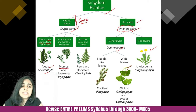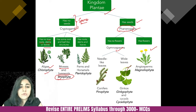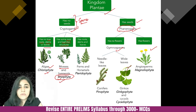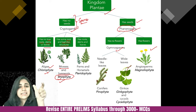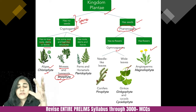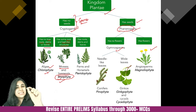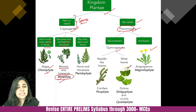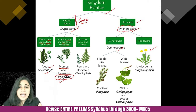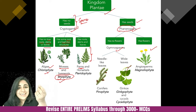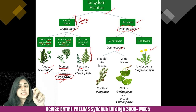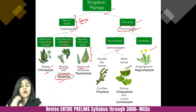Then we come to mosses and liverworts, which are the kingdom bryophyte. They have some root and leaf-like structures. If you see mosses, these are the green varieties which are stuck onto rocks. If a rock is moist, you will see it gets green — those small green patches are actually mosses. The more evolved variety is ferns. There's a company called Ferns and Petals; ferns are cryptogams which do not have seeds, but they are a more evolved form of bryophytes.